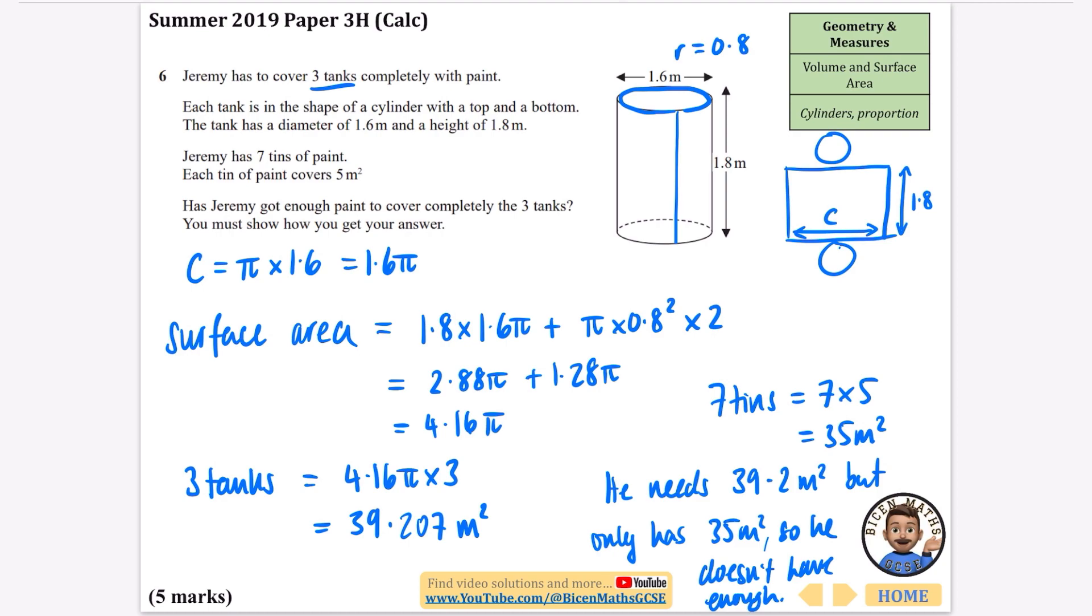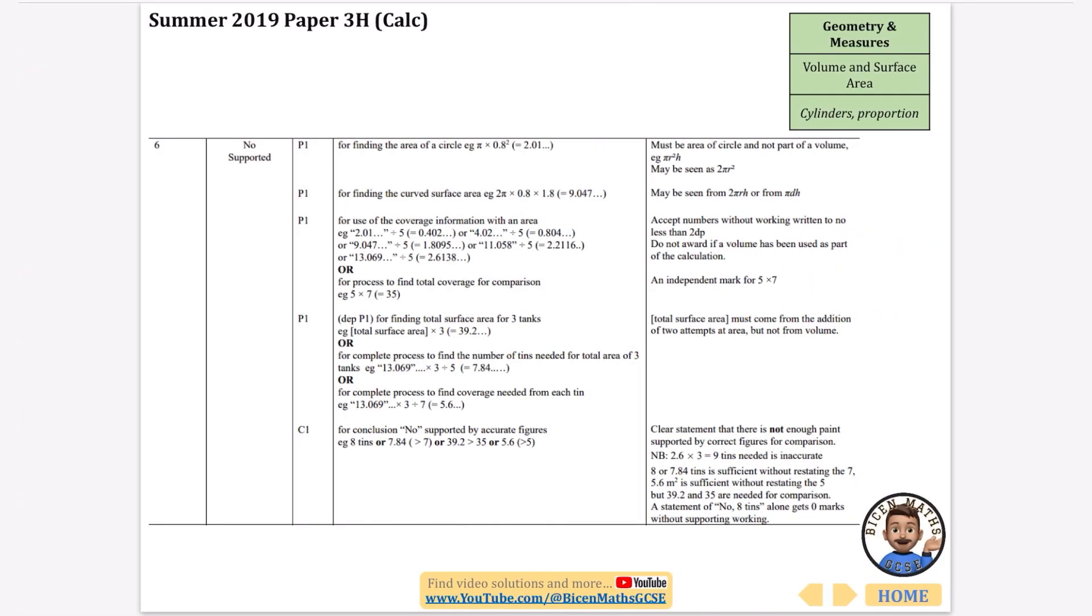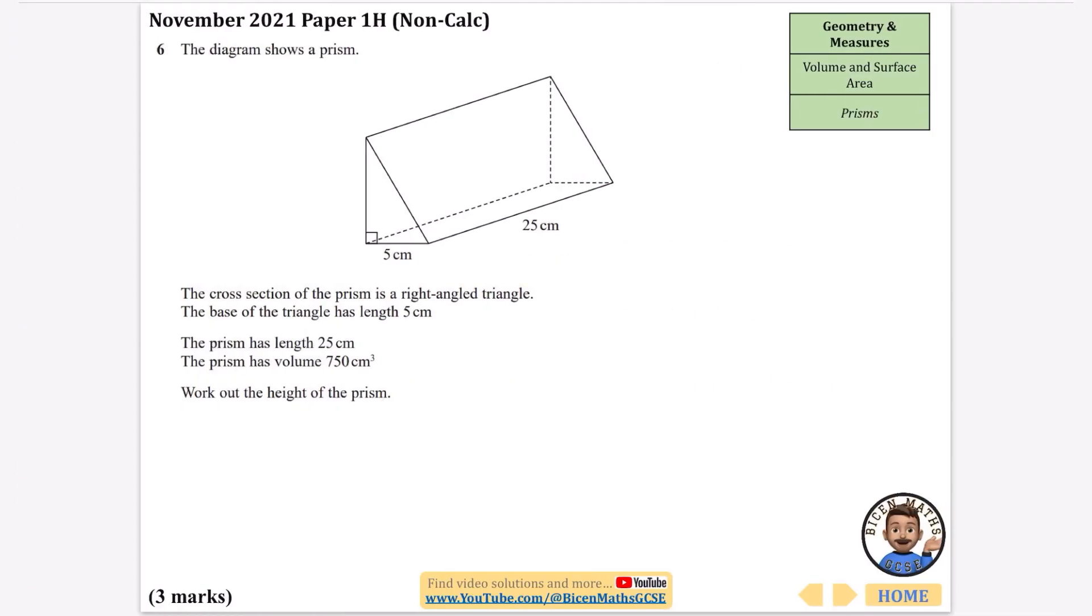Let's double-check we've got this right. There's that 39.2 we have, and no, he doesn't have enough. For this next one, a non-calculator question, it says the diagram shows a prism. The cross section of the prism is a right angle triangle. The base of the triangle has length 5, and the prism has length 25. The prism has volume 750 cm³. Work out the height of the prism.